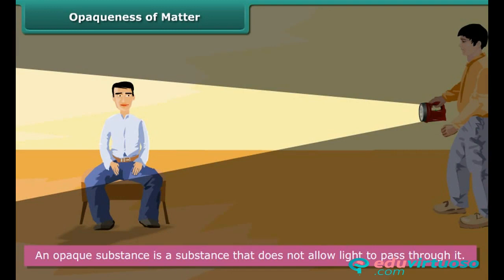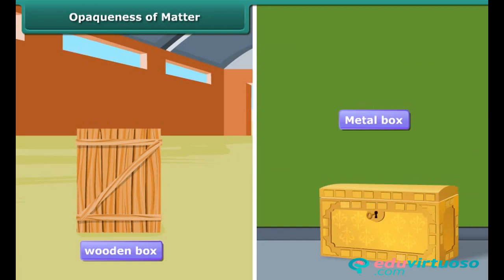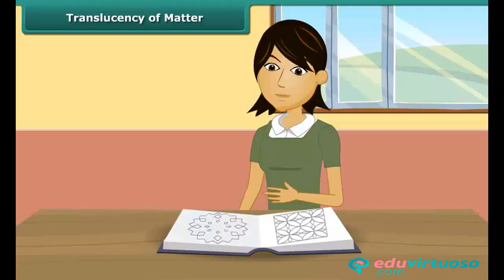An opaque substance is a substance that does not allow light to pass through it. In other words, it is impenetrable by light. It does not absorb light; instead, it reflects light back. Hence, we cannot see things through an opaque substance. For example, we cannot say what is kept in a closed wooden box or a metal container, as wood and metal are opaque.